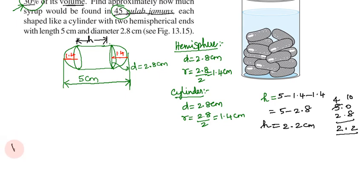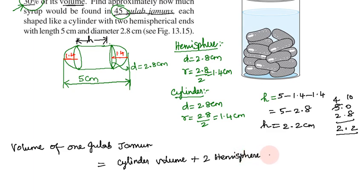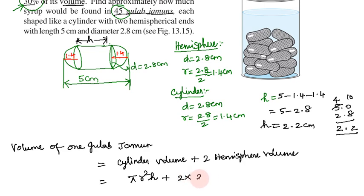Volume of one globe jamun equals cylinder volume plus two hemisphere volumes. So: cylinder volume equals pi r squared h, plus 2 into hemisphere volume equals 2 by 3 pi r cubed.